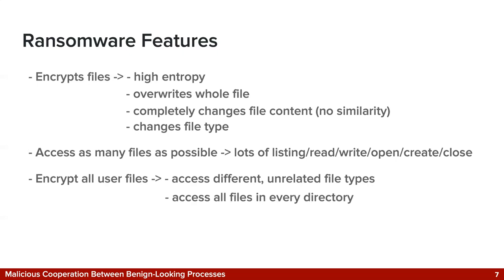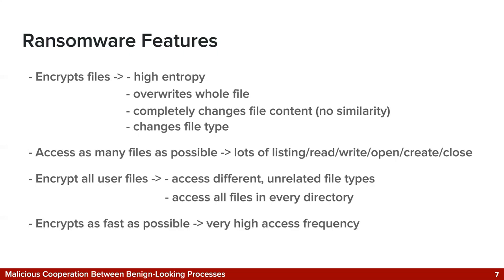Similarly, ransomware also tends to access files in every user directory. And because time is of the essence for a ransomware attack, a ransomware process will attempt to encrypt as many files as it can, as quickly as it can, resulting in a very high frequency of file system operations. All those considerations suggest that it should be possible and relatively easy to train a behavioral detector to distinguish ransomware from benign processes based on features derived from these characteristics, and a number of previously proposed works do just that.